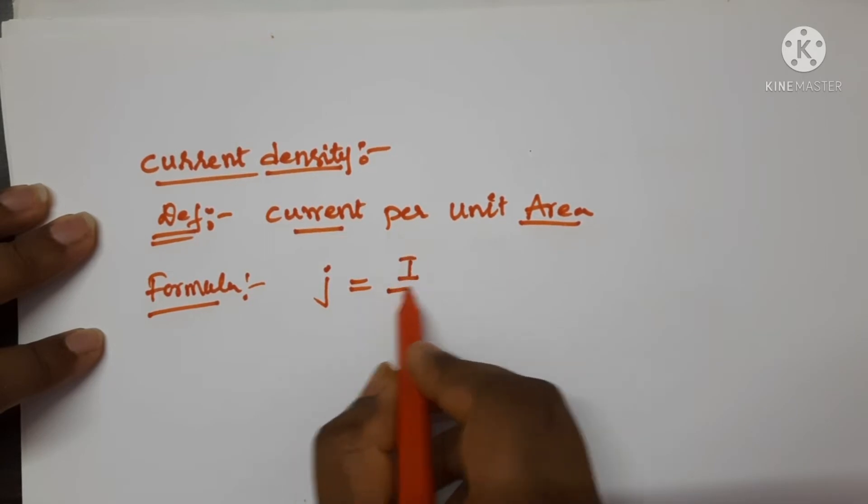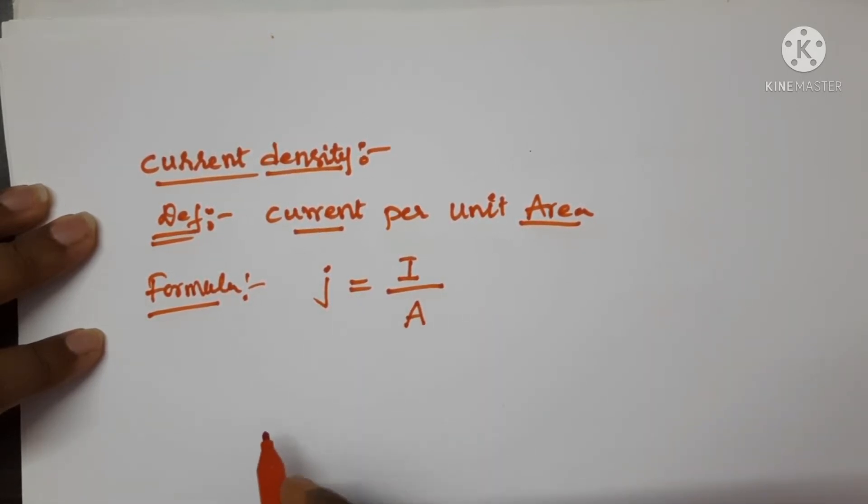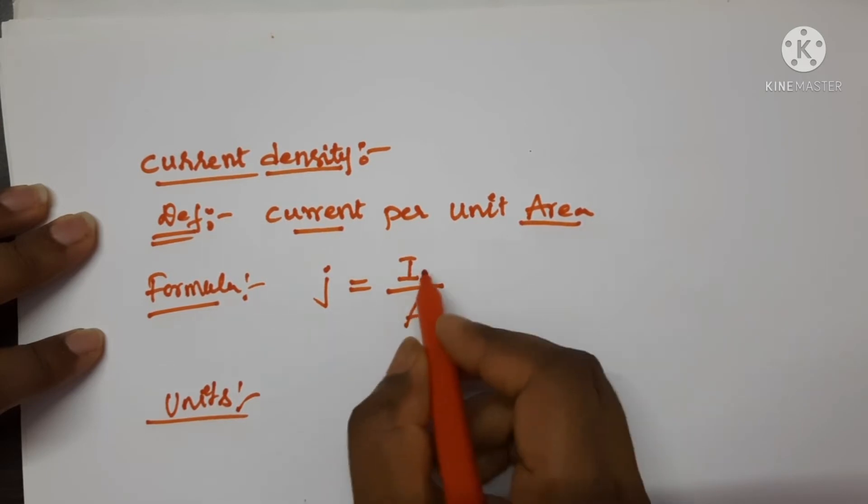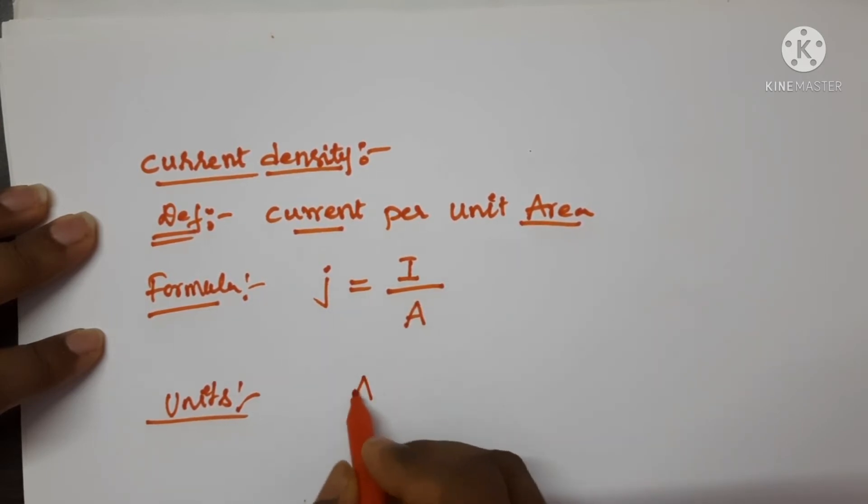Current is denoted with letter I and area is denoted with letter A. Let us see the units. SI unit of current density is A per meter square, where A is ampere and meter square is the area.